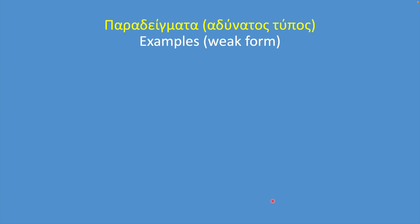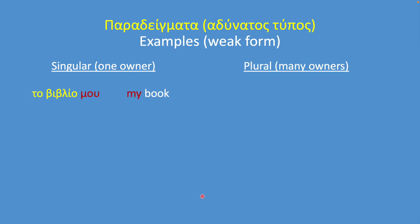Some examples will make things clearer. As you can see, it doesn't matter if it's one book, το βιβλίο, or many books, τα βιβλία — μου doesn't change. As long as the owner is I, the weak possessive pronoun will always be μου.